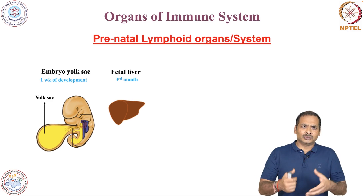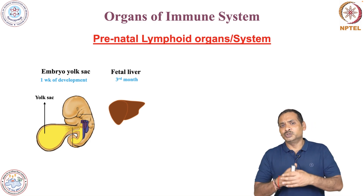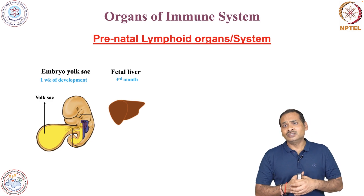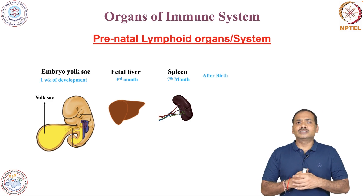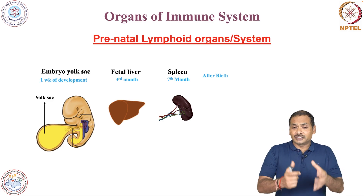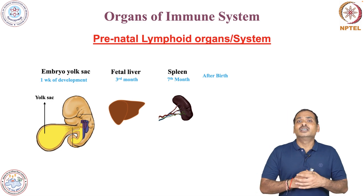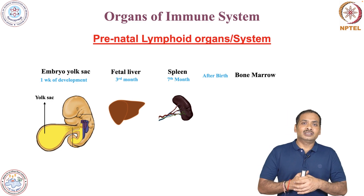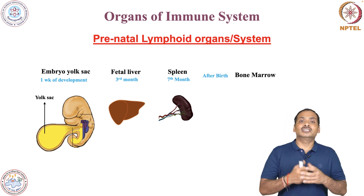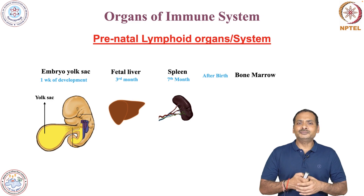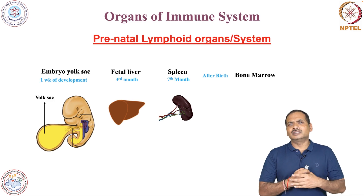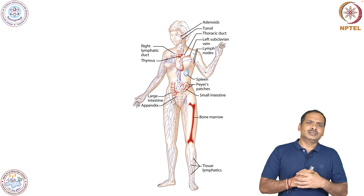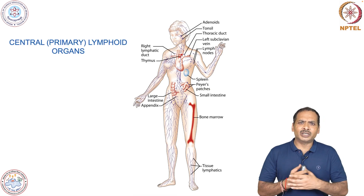From the fetal liver, development of immune cells takes place to give protection to the fetus. Later, after seven months, this is taken over by the spleen. Immediately after birth, the generation of immunocompetent cells is taken over by the bone marrow. In the next session, I will discuss bone marrow in great detail. In adult humans, the primary and secondary lymphoid organs are the key structures of the immune system.